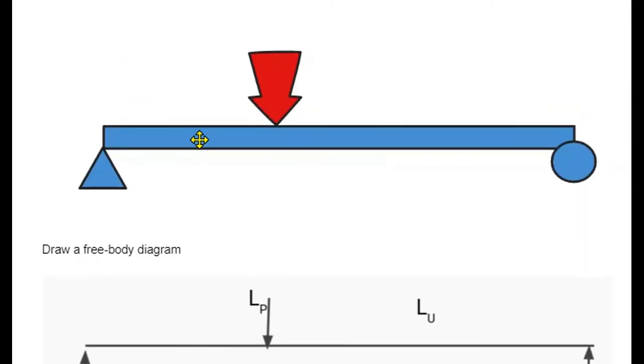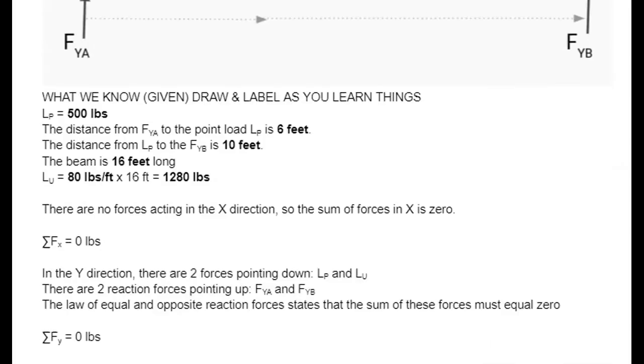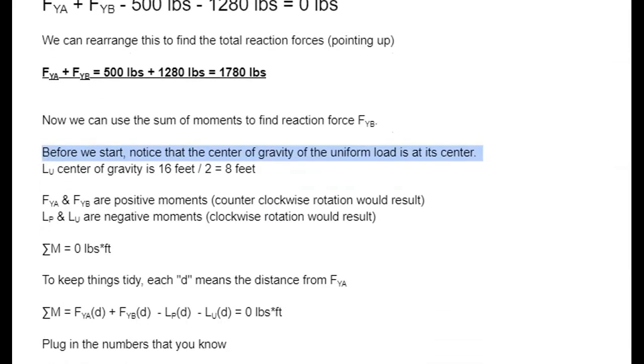Let's go look at that. Pretend this is a clock pointing at 3 o'clock. If we took away these forces and this force could push up, it would go counterclockwise. This force, if we took the roller away and it could push, it would push down and go clockwise. So up is positive. Down is negative.